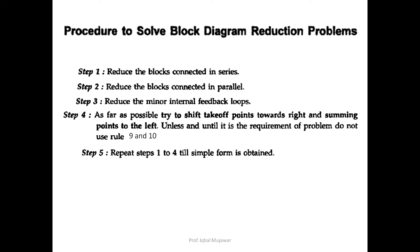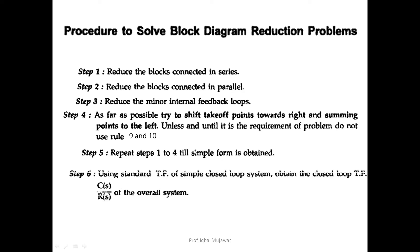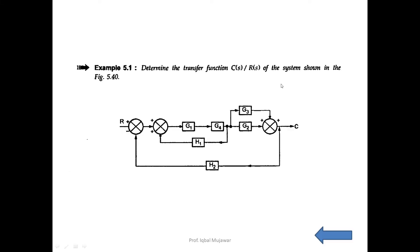Step number five: repeat steps one to four until we get the simple form. Then, using the standard transfer function of a simple closed loop system, obtain the closed loop transfer function C(S)/R(S) for the overall system. That is the procedure we need to follow while solving block diagram reduction problems.